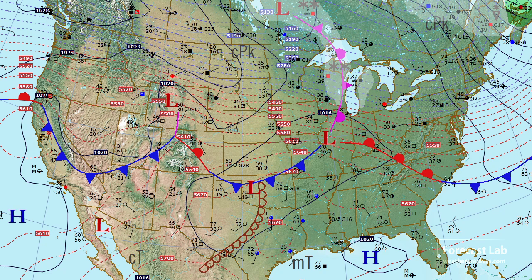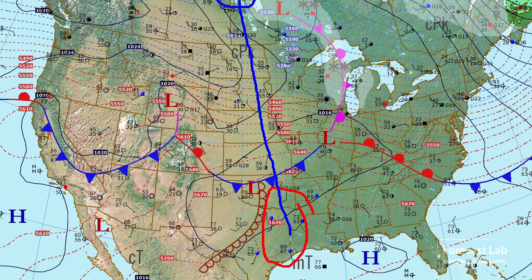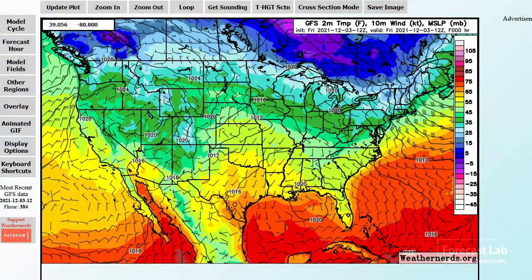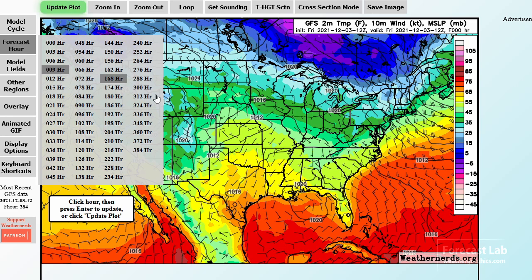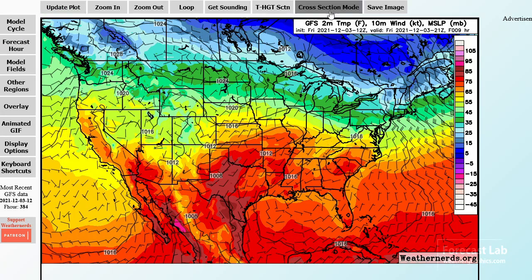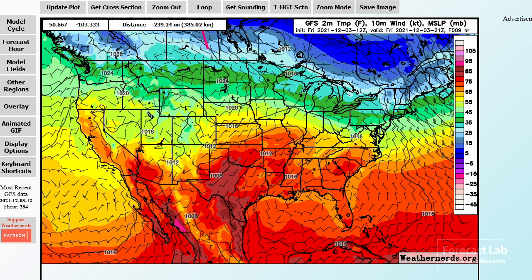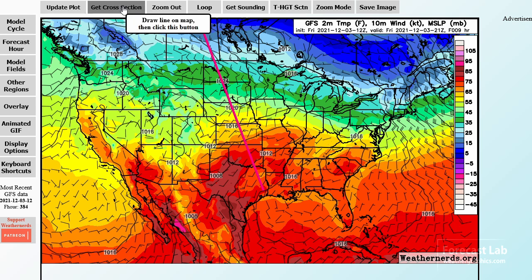Returning to our surface map, it's probably about time to bust out the cross sections. Let's go from this tropical air — 70s with 60s dew points in East Texas — across this frontal zone and into the cold air in Canada. Let's go to Weather Nerds, that's a good site for that. So there's our GFS plots. We need to make sure we're looking at the correct valid time, so we're going to kick that up to about the nine-hour point. We go to this cross-section mode right here, draw a line, and we get the cross-section.